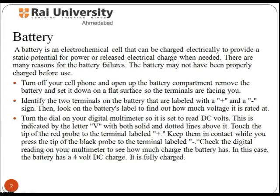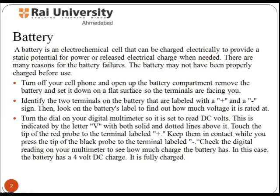A battery is an electrochemical cell that can be charged electrically to provide a static potential for power or release electrical charge when needed. To test a battery, turn off your cell phone and open up the battery compartment. Remove the battery and set it down on a flat surface so the terminals are facing you. Identify the two terminals labelled with positive and negative signs, then look on the battery label to find how much voltage it is rated.